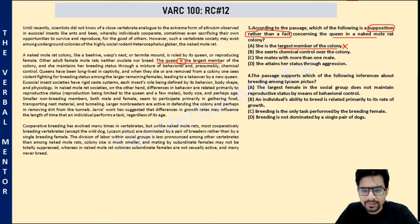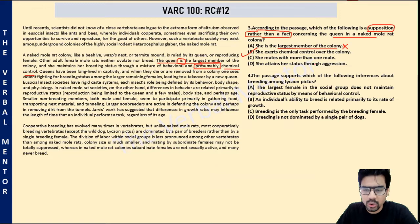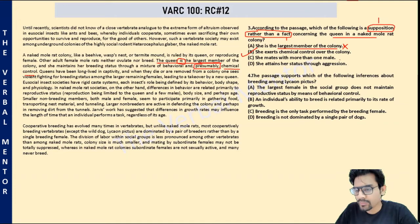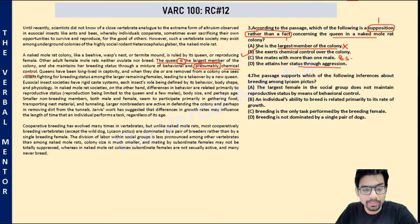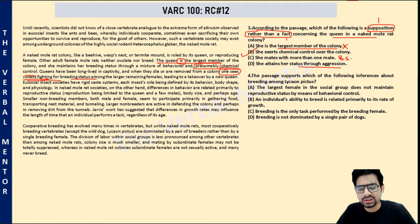Option B: she exerts chemical control over the colony. The author uses the word 'presumably' — chemical control — which means this is a supposition rather than a fact. The author is presuming there is some sort of chemical control by the queen. Option C: she mates with more than one male. This is neither a supposition nor a fact — we don't know whether the queen mates with multiple males or not; it is out of scope. Option D: she attains her status through aggression. This is a fact — the author clearly mentions that after the queen dies, there is ferocious, violent fighting. This is presented as a fact rather than speculation. Correct answer is B.